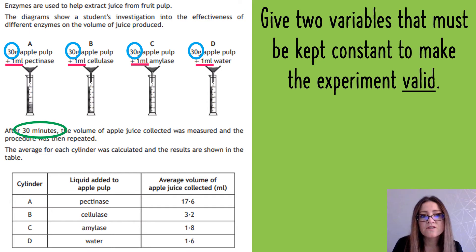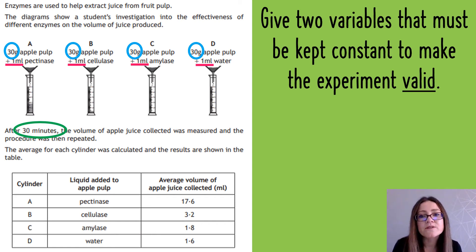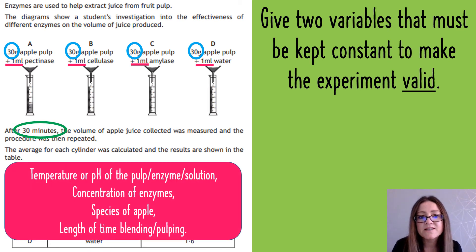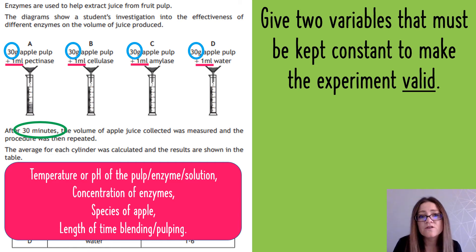You need to identify what they've said they're keeping constant, and then decide what else could be kept constant. There are quite a few things you could pick. For this experiment, you could keep the temperature constant, the pH of the pulp and enzymes, or the concentration of the enzymes. You could use the same species of apple, or have the same length of time when blending. These vary from question to question, which is why students find it so difficult to answer.